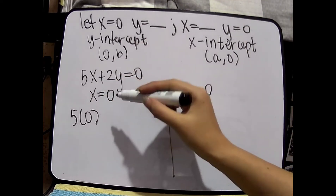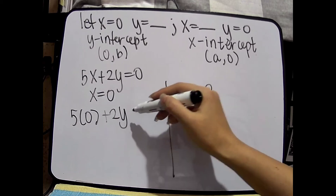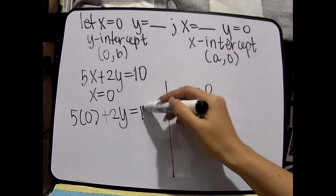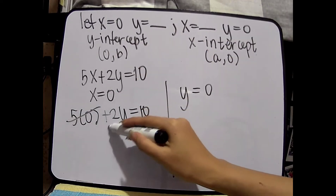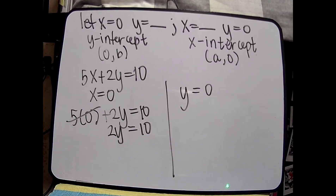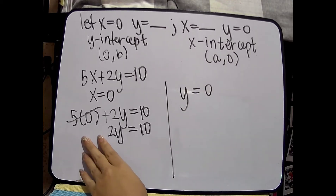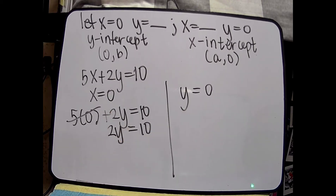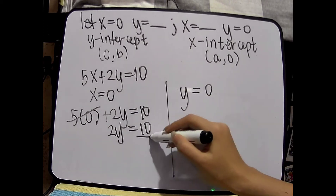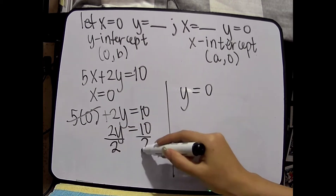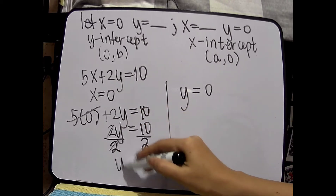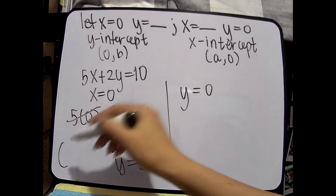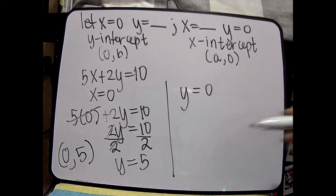So, 5 times 0 — we just replace this doon sa x — plus 2y equals 10. So, magiging 0 ito. May matira lang: 2y is equals to 10. We will not transpose kasi wala namang another term na nagsaseparate dito. What we will do is divide both sides by 2, applying the MPE. So, we have y is equals to 10 divided by 2, which is 5. So, ang ating ordered pair dito, dahil sa x that is 0, is (0, 5).